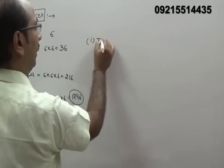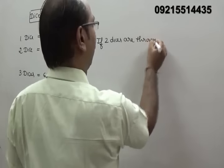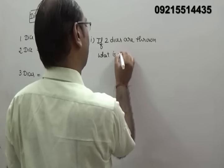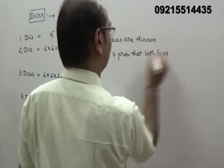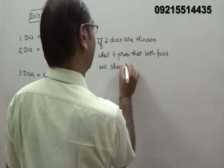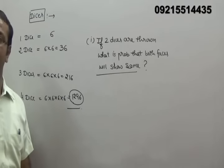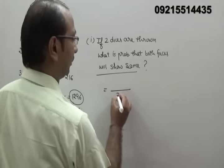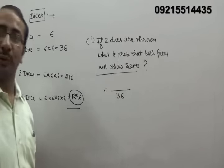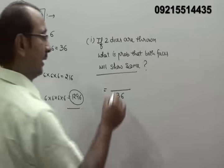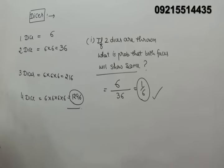First problem: if 2 dice are thrown, what is the probability that both faces show the same number? Total sample space is 36. For favorable cases, both dice can show (1,1), (2,2), (3,3), (4,4), (5,5), (6,6) — that is 6 favorable cases. So the probability = 6/36 = 1 upon 6.